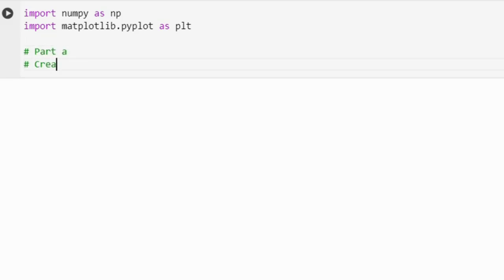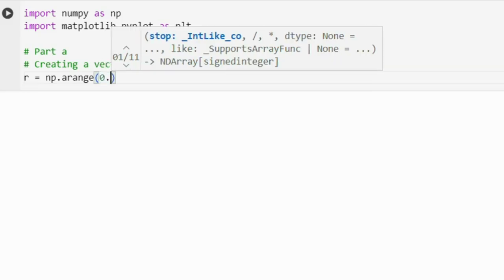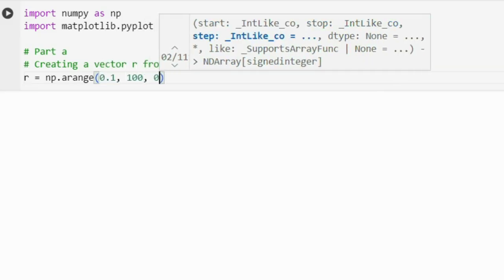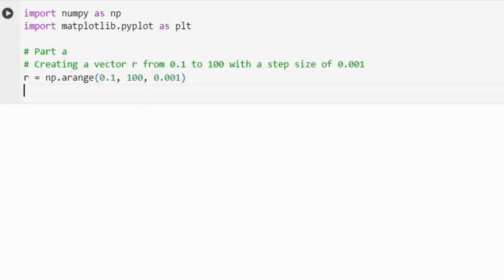In order to generate a vector of values from 0.1 to 100, we will use NumPy method. We will generate a vector r, ranging from 0.1 to 100, with a step size of 0.01. This is done using NumPy method named arange whose first argument is starting value, second argument is ending value, and third argument is step size. Now, imagine if you want to generate a vector from 1 to 1,000 with a step size of 5, what will be the Python command for that? Think about it and leave a comment.